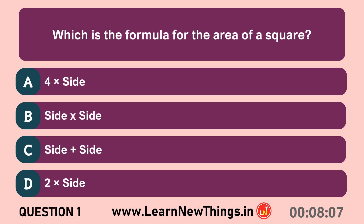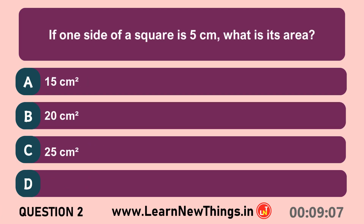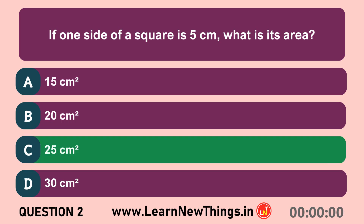Which is the formula for the area of a square? Side into side. If one side of a square is 5 cm, what is its area? 25 cm².